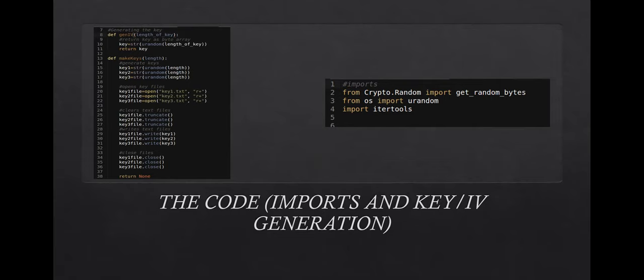The gen_iv function typecasts the output to a string and returns it. The make_keys function accepts the length of the plaintext message, passes it into urandom, and saves it to three different files: key1, key2, and key3. For demonstration purposes, keys are saved to text files so we can display what they look like, then the file stream is closed.